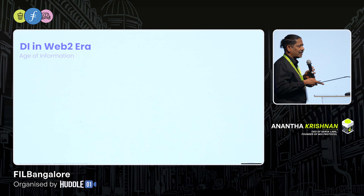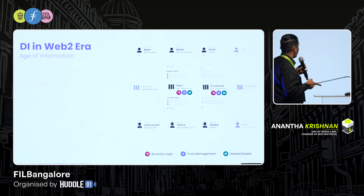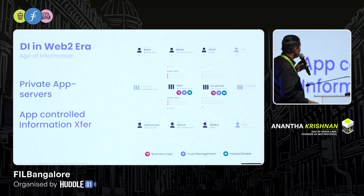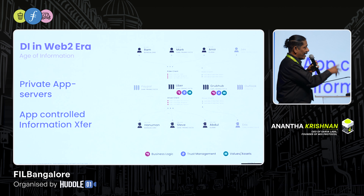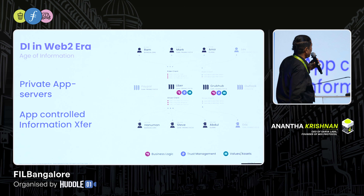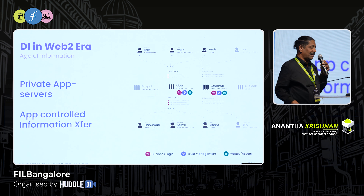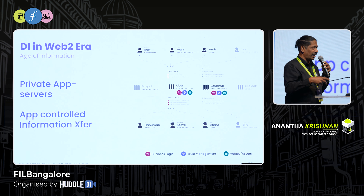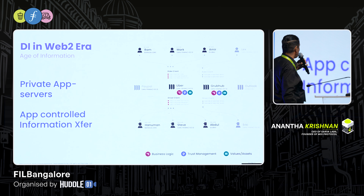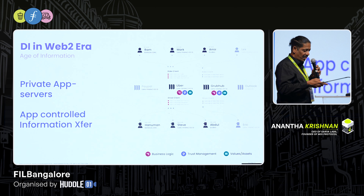How are digital interactions supported today in the Web2 era — the age of information? You have an app server; all interactions, assuming a cab-hailing app, go to that app server. All the controls — business logic, trust management, value and assets — happen through the app server. Your entire life depends on it. If the Zomato servers go down, you don't get food. That's Web2: private app servers and app-controlled information transfer.